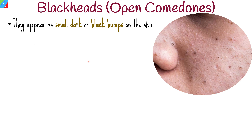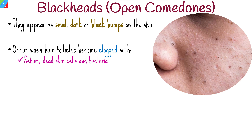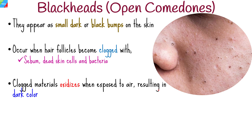Blackheads, also known as open comedones, appear as small dark or black bumps on the skin's surface. They occur when hair follicles become clogged with an excess oily substance known as sebum, dead skin cells, and bacteria. Their pores remain open. The clogged material at the follicle's opening oxidizes when exposed to air, resulting in the characteristic dark color.